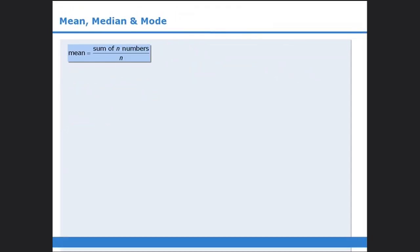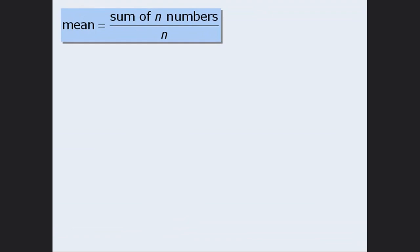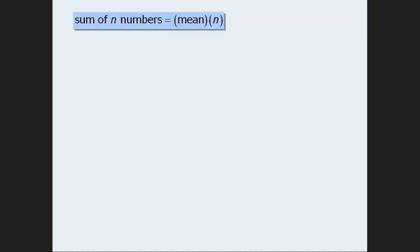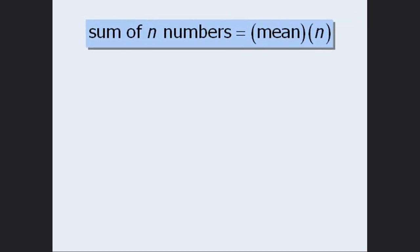Before we conclude this lesson, I want to introduce a formula that is a direct result of the formula for calculating the average. If we take this formula and multiply both sides of the equation by n, we get a new formula. This formula tells us that the sum of the n numbers in a set will be equal to the mean of those numbers times n. This formula is very useful for solving many GRE questions related to average, so be sure to consider using it when you encounter a question involving average.